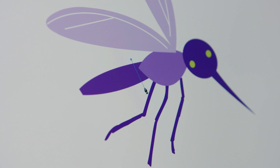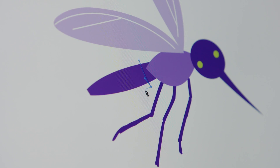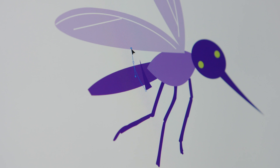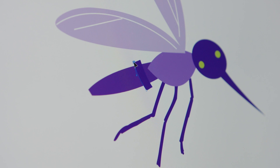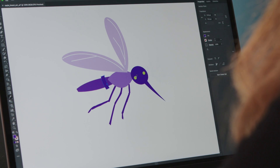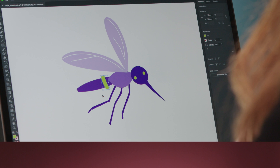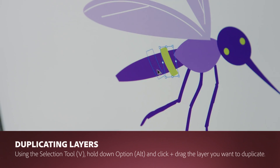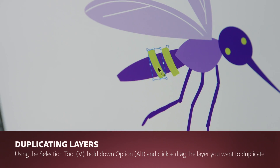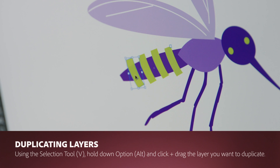Now I'm going to add some stripes to the body. I'm working with the Pen tool and I'm just drawing a single stripe here. Now I'm going to use the Eyedropper tool to grab a color and I'm going to hold Option or Alt to copy a few of these stripes on the body of this mosquito.